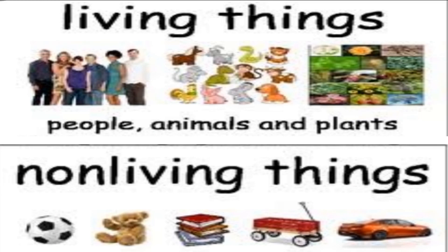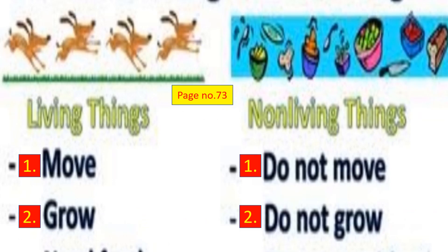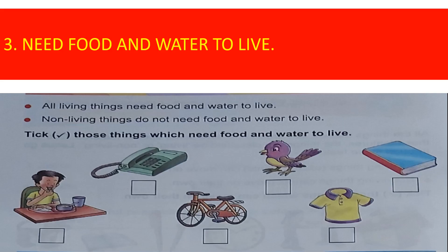For revision: living things include people, animals, and plants. Non-living things include water, soil, toys, books, eraser, pen, pencil, table, paint, and vehicles. From page number 73, we learned two characteristic features of living and non-living things: number one is movement, and number two is growth. Living things can move and grow; non-living things do not move or grow and change.